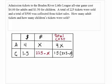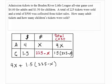If we add the total cost for adults — 4X — to the total cost for children — 1.5 times (225 minus X) — what should this be equal to? It should be equal to $500, since that's the total amount collected.